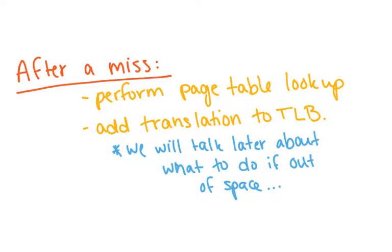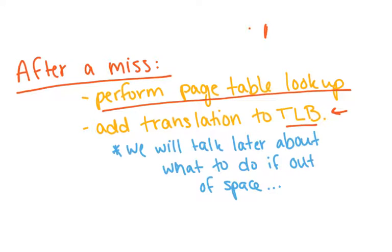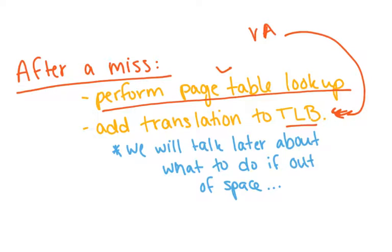After a miss, you perform the page table lookup, and then you add that translation to the TLB. So the next time that virtual address is generated by the CPU, it will already be in the TLB and you don't have to go through the page table again. Another question is: what happens if the TLB is full? We'll have to do some type of replacement, and we'll talk more about that later when we discuss virtual memory.